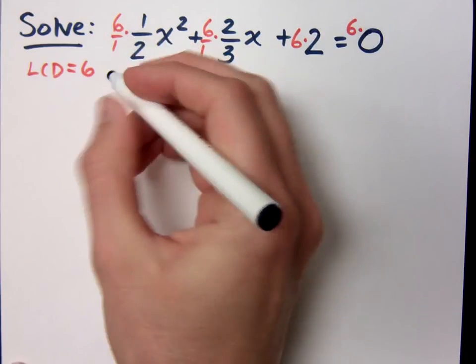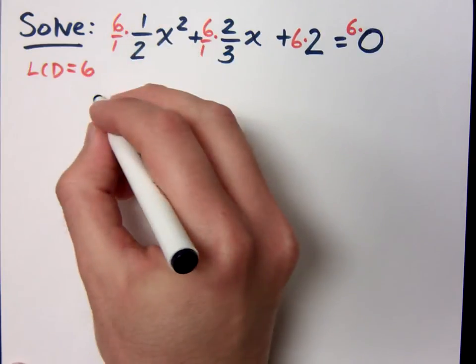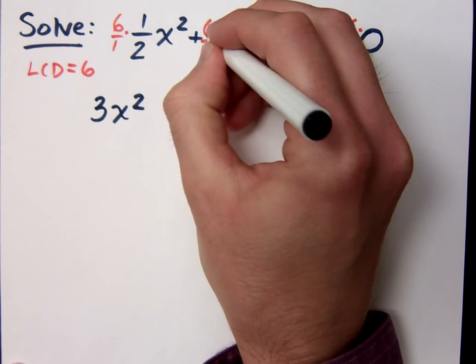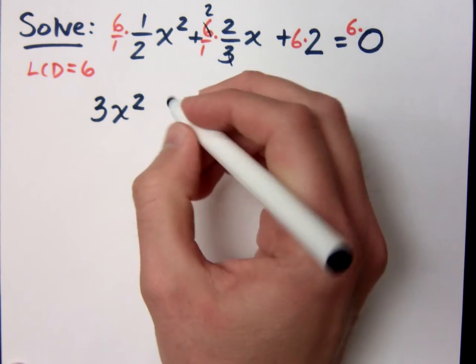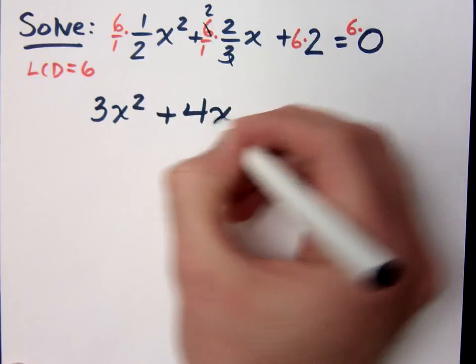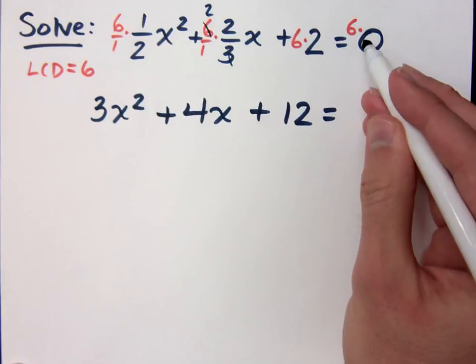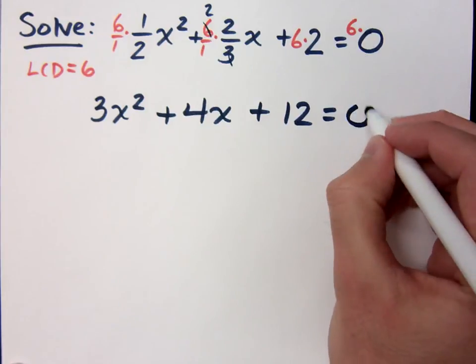6 divided by 2 is 3, so 3 times the 1. You get 3x squared. 3 reduces into the 6, 2 times, so that's plus 4x. Then plus 12 is equal to, don't forget, 6 times 0 is still just 0.